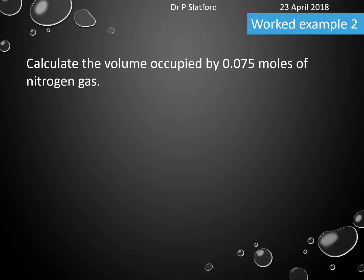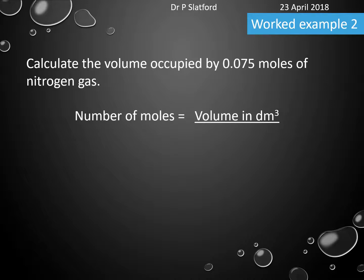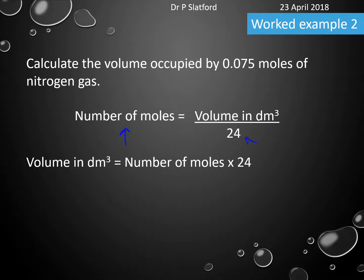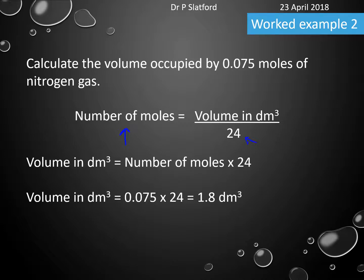Another worked example: calculate the volume occupied by 0.075 moles of nitrogen gas. We know that number of moles equals volume in dm³ divided by 24. We're given the number of moles in the question, so we need to rearrange the equation so that volume in dm³ is the subject. That gives us volume equals number of moles times 24. Plugging in our numbers: 0.075 times 24 equals 1.8 dm³. Just as a heads up, that is 1,800 cubic centimeters.